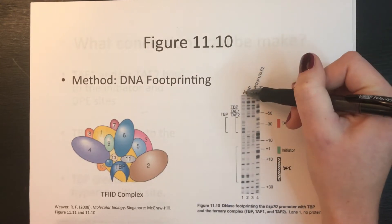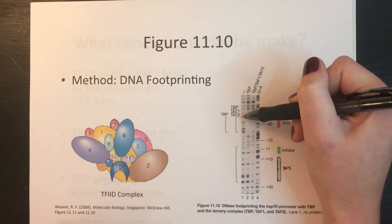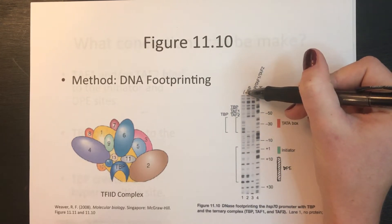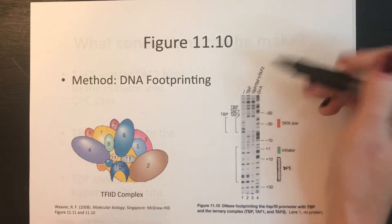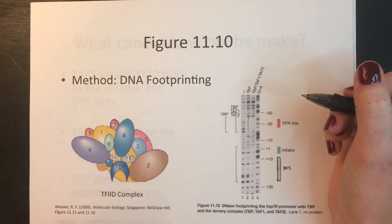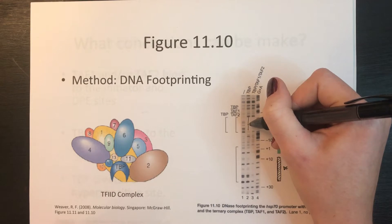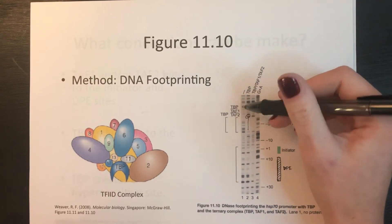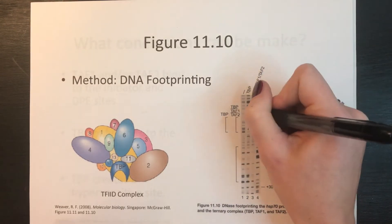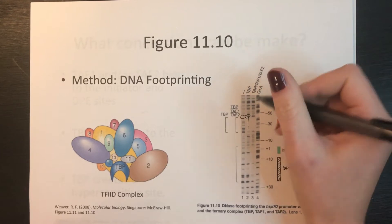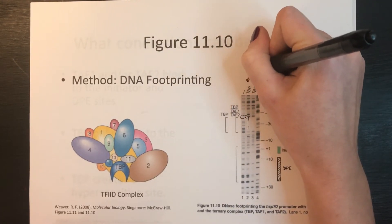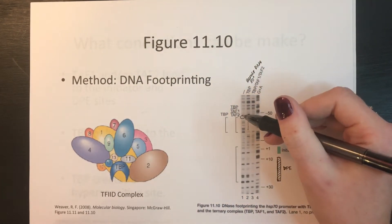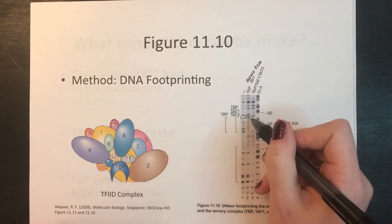Lane 1 in the footprinting gel has no protein added and serves as a control to compare the other lanes with. Lane 2 contains just the TATA-binding protein. We already know TBP binds to the TATA box, so we see a clear footprint there, as well as a hypersensitive site at the top of the footprint. It is known that TBP bends DNA approximately 80 degrees, and DNase is a large enough enzyme to be affected by this local structural change, resulting in that hypersensitive site.